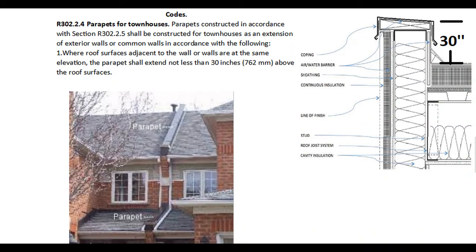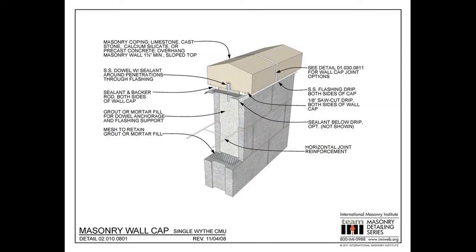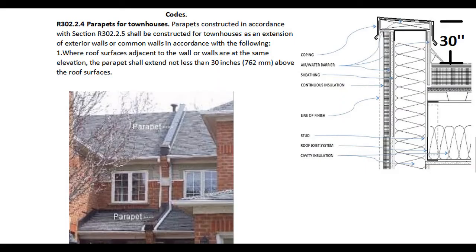R302.2.4 Parapets for Townhouses. Parapets constructed in accordance with Section R302.2.5 shall be constructed for townhouses as an extension of exterior walls or common walls in accordance with the following: 1. Where roof surfaces adjacent to the wall or walls are at the same elevation, the parapet shall extend not less than 30 inches above the roof surfaces.